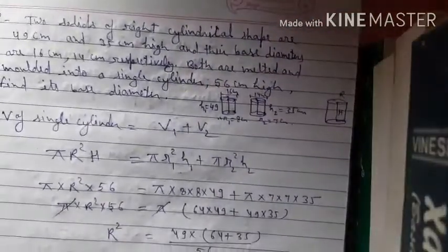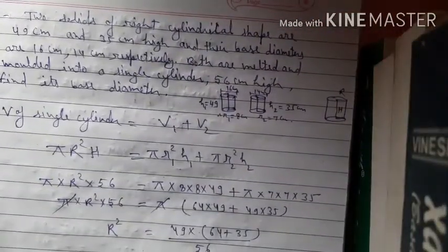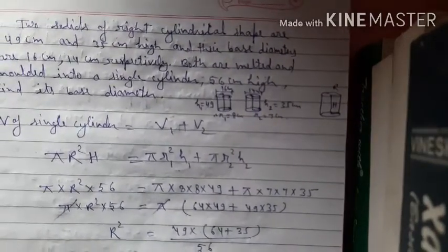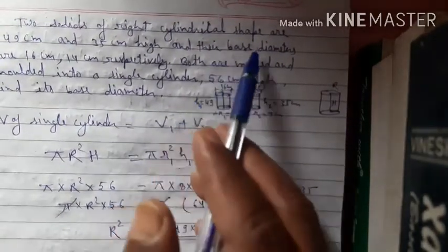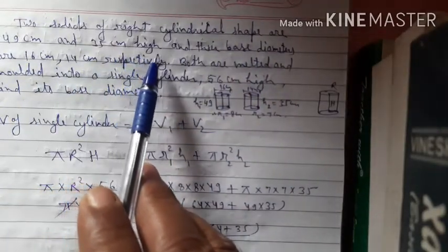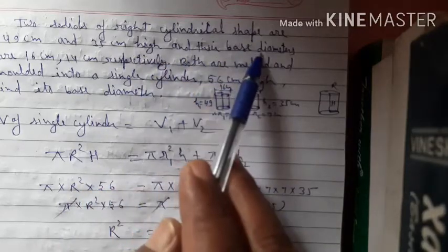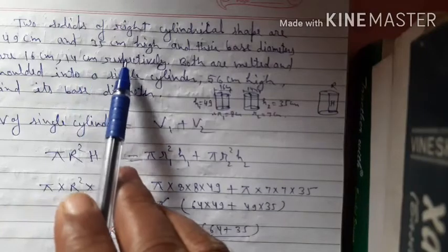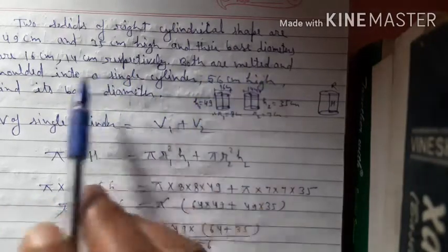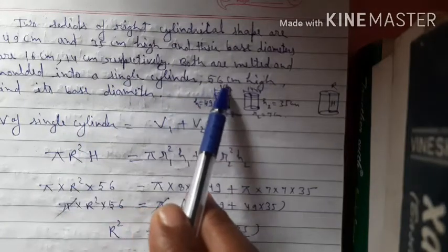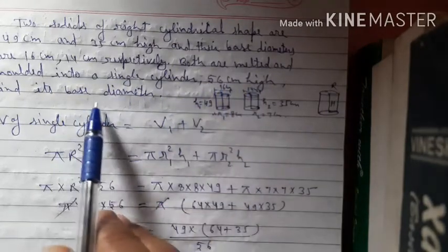Now let us see Question Number 8. Two solids of right cylinder shape are 49 cm and 35 cm high, and their base diameters are 16 cm and 14 cm respectively. Both are melted and moulded into a single cylinder of 56 cm height. Find its base diameter.